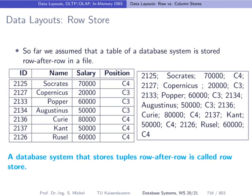In the beginning of the course, we looked at how the database system is storing tuples in pages on disk. What we assumed there is that you're storing inside a page, inside a file, these individual tuples one after the other. This can look like this: we have a table with professor information and the corresponding file content on disk, storing tuple after tuple. Since tuples correspond to rows, this is also called row-after-row layout, or short, row store.